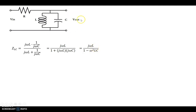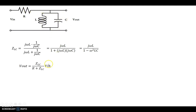Now we look at the output voltage. We have this parallel network across which the output voltage is being measured, with a resistor in series to that parallel network. So by voltage divider, we can say that Vout is equal to the impedance of the LC network divided by the impedance of LC plus R, times Vin. That's what we get from the voltage divider.